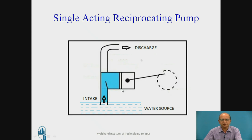An IC engine is provided with a valving system. But in this case, the valving system is very simple — in an IC engine we require the camshaft, pushrod, and rocker arm. These are the elements required for the opening and closing of the valves.